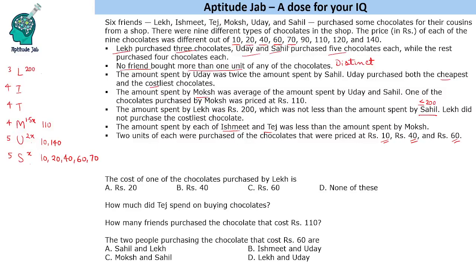Since Sahil spent 200, we can get the expenditure of Uday and Moksh also. Uday will spend 400 and Moksh will spend 300. Ishmit and Tej will each spend less than 300 — that is given to us. Now what we are left with is finding the combinations for Lake, Uday and Moksh.